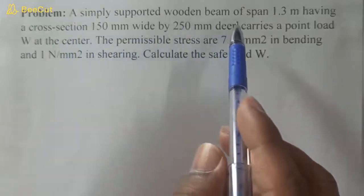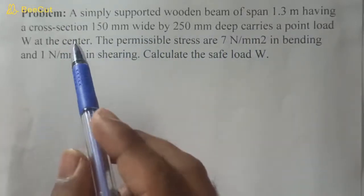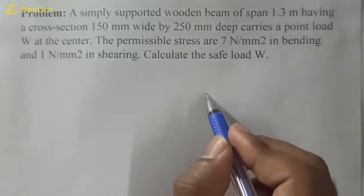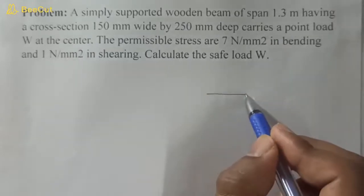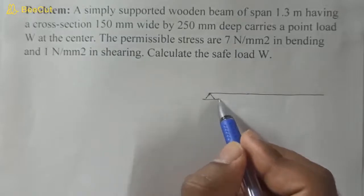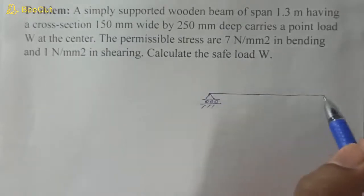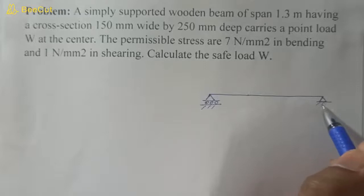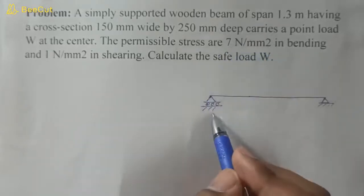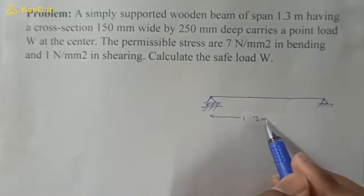The question: a simply supported wooden beam of span 1.3 meters. We will draw the beam — it is simply supported, meaning at one end it is a roller support and at the other end it is a pin support. The span is 1.3 meters.